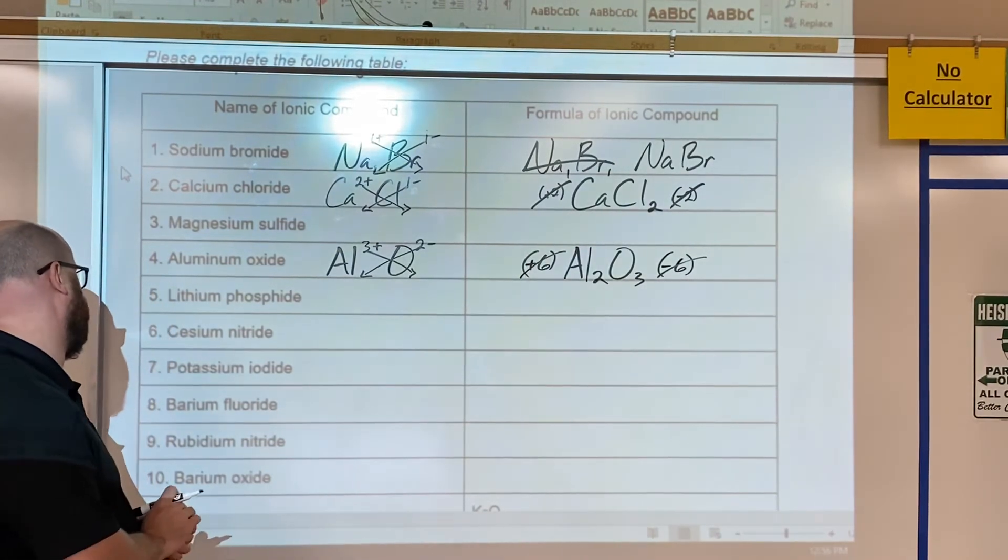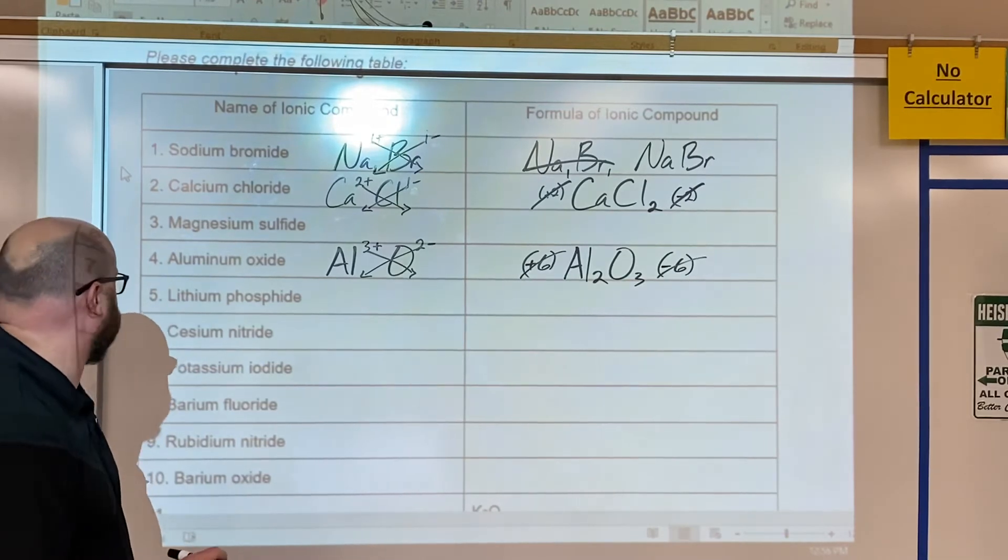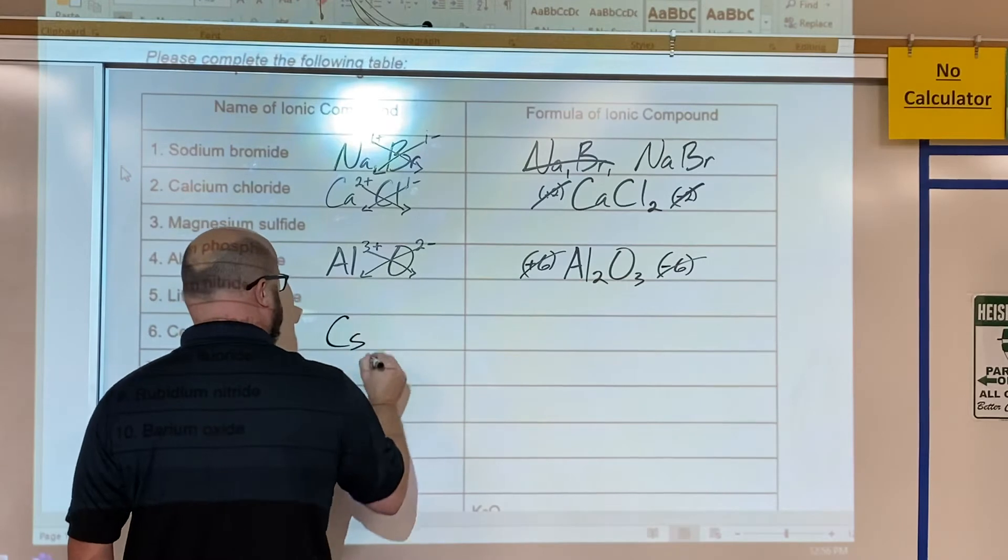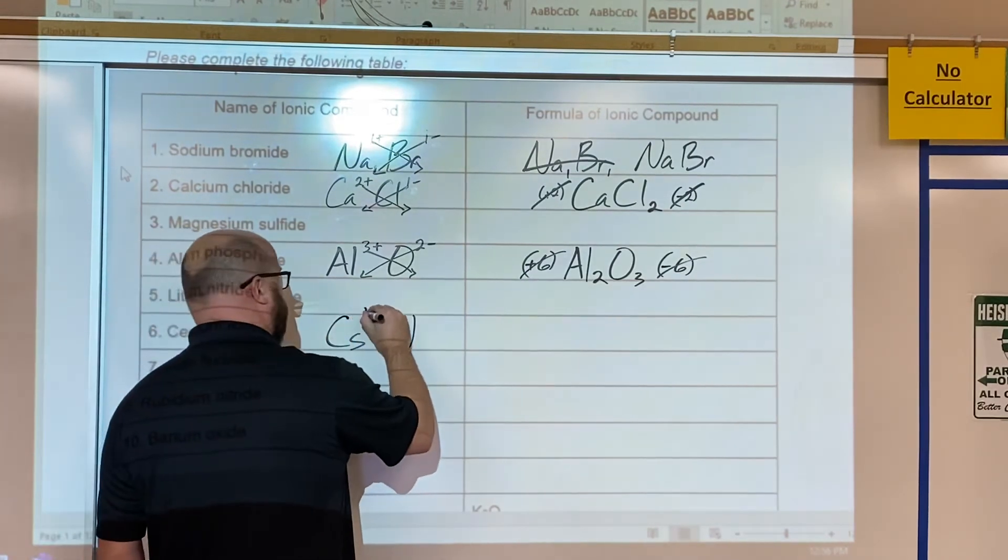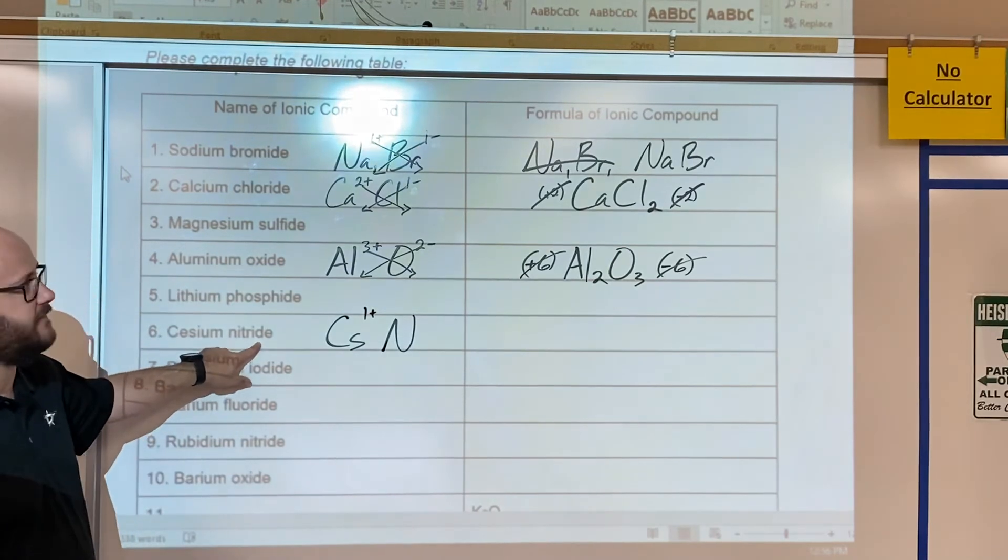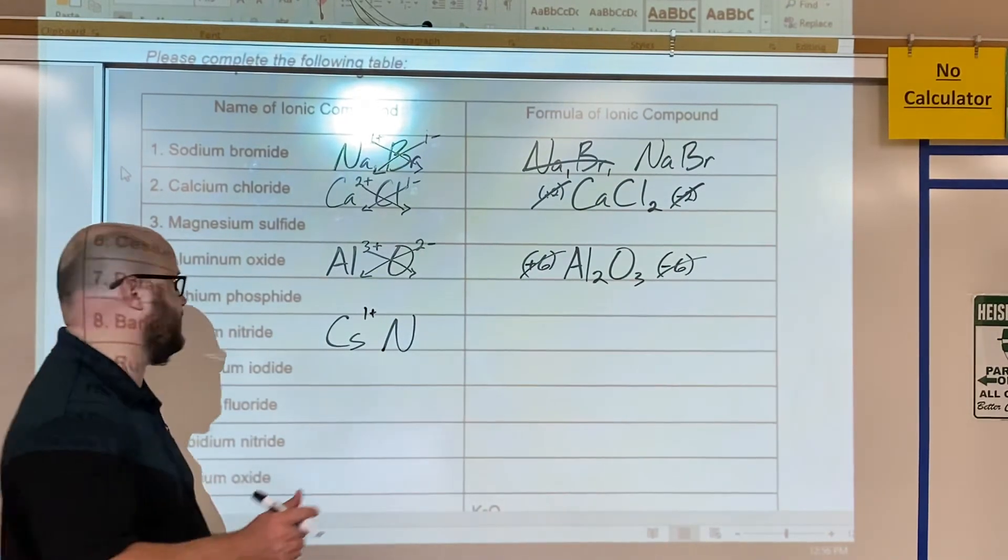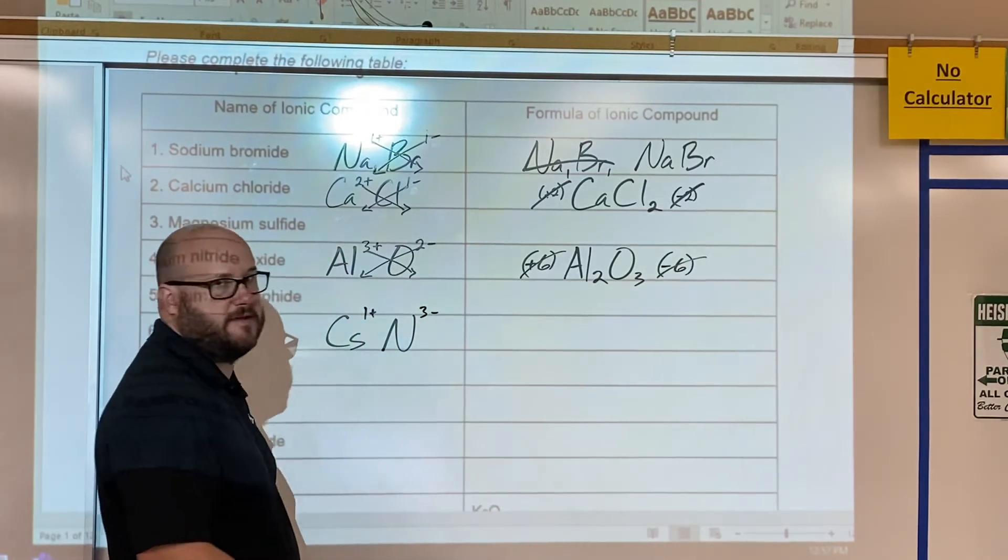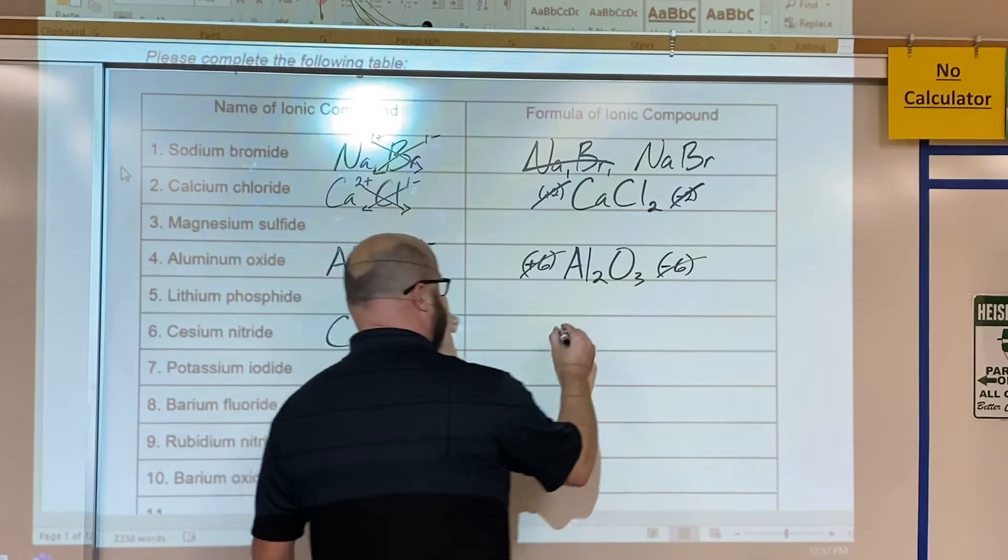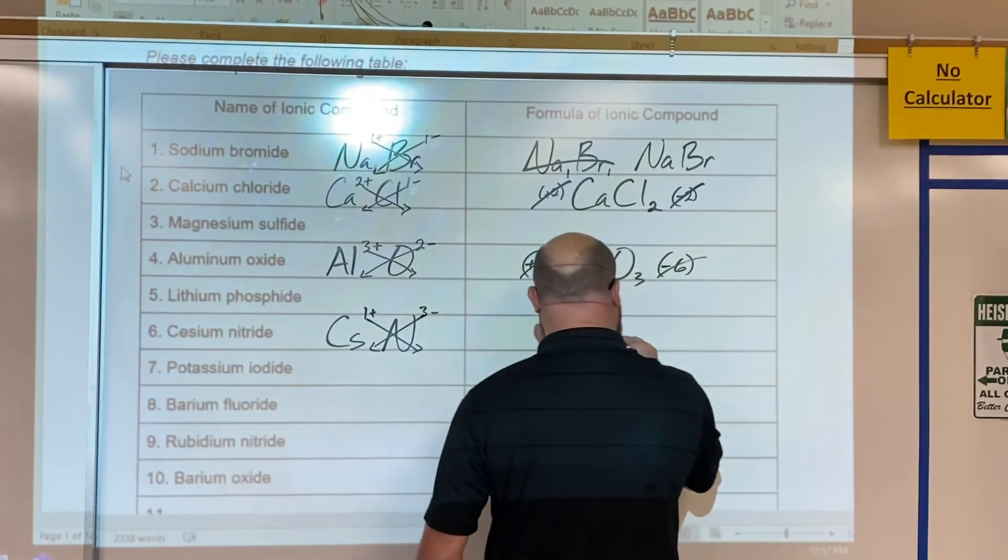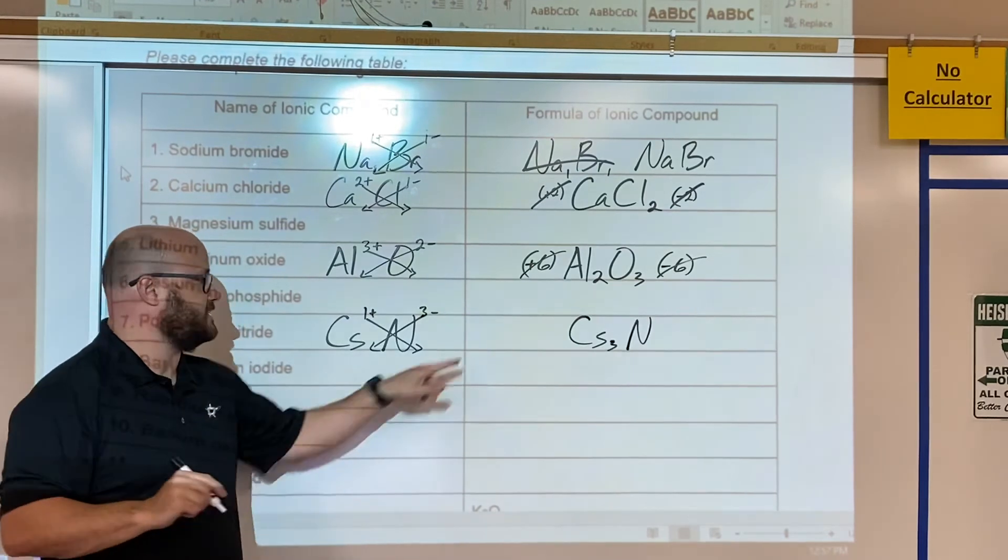Let's try another one here, cesium nitride. Cesium, down the bottom left hand side of the table, symbol is Cs. Nitrogen is N. Cesium is in group one so it's just going to be a one plus. Nitrogen however is in group five. Group five has five valence and it wants to gain three. It's easier to gain three than it is to lose five, so we're going to gain three and become a three negative anion. Crisscross applesauce. Go over here, we've got Cs3N. Don't have to write that one. Cesium nitride.